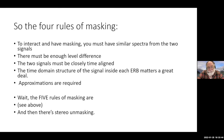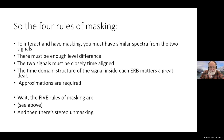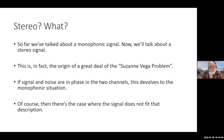So there are four rules of masking: you have to have a similar spectrum; you have to have enough level difference; the two signals have to be time-aligned; and the time-domain structure has to be considered. Approximations are required, which immediately gets us to five rules. And we haven't done stereo yet. Time delays, time regularity, and envelope all come into play in stereo.